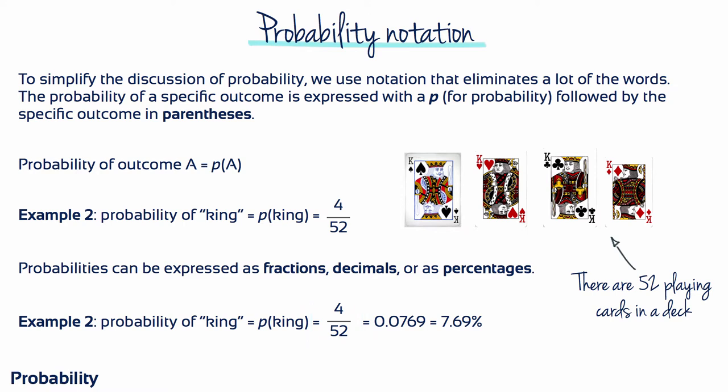So the probability of selecting a king from the whole deck is 4 out of 52. Note that probability is defined as a proportion or a part of the whole, which makes it possible to restate any probability problem as a proportion problem. For example, the probability problem 'what is the probability of selecting a king from a deck of cards?' can be restated as 'what proportion of the whole deck consists of kings?' The whole deck of cards can be considered the population and the single card we select as the sample. By convention, probability values are most often expressed as decimals — here, 4 out of 52 is 0.0769 as a decimal, or 7.69% as a percentage.